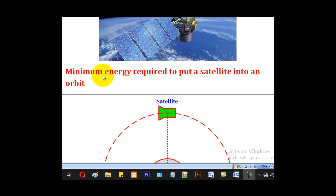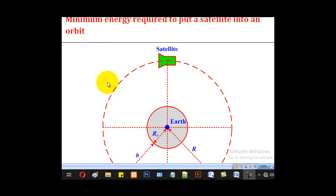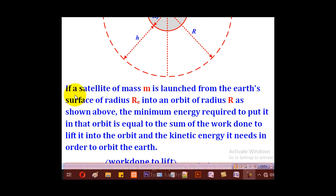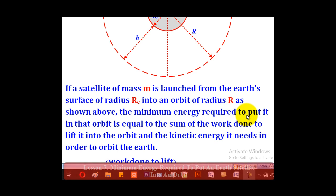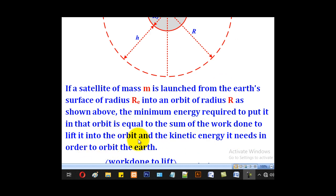We are interested in calculating the minimum energy required to put a satellite into an orbit. If a satellite of mass m is launched from the Earth's surface of radius r_e into an orbit of radius r, the minimum energy required to put it into that orbit is equal to the sum of the work done to lift it into the orbit and the kinetic energy it needs in order to orbit the Earth.